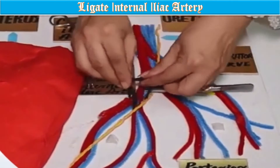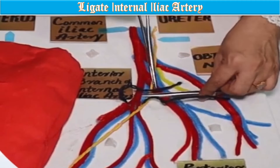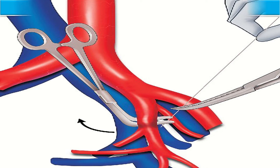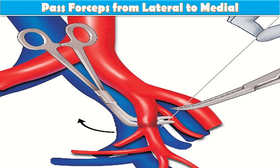In this way, internal iliac artery ligation is performed. It may be helpful to elevate the artery gently with a Babcock clamp and pass a double strand of number one absorbable suture behind the artery with a right-angle forcep. Pass the forcep from lateral to medial to avoid risk of trauma to the adjacent iliac vein. The artery is then ligated but not divided.